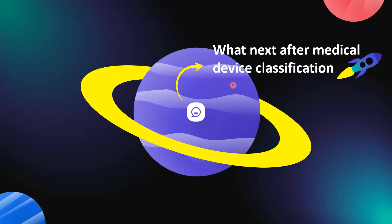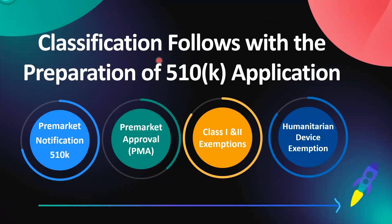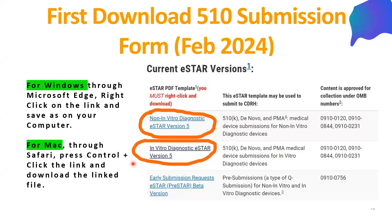After medical device classification and accumulating all the requisite information, classification of the medical device is followed by preparation of the 510-K application and defining the pathway — either pre-market notification 510-K or pre-market approval. It is essential to take into consideration Class 1 and 2 exemptions, as well as humanitarian device exemption. You are then ready to download the eStar PDF template to fill out the application appropriately. This is a highly technical job and you will definitely need help from experts with prior experience or guidance from the FDA.